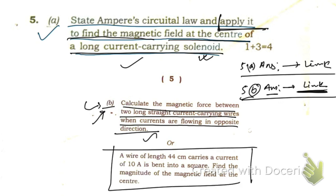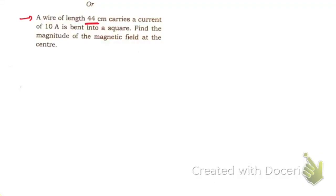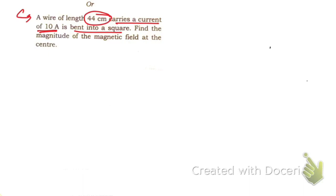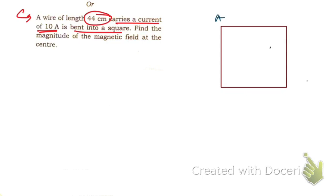Now let's solve the last question. A wire of length 44 centimeters carries a constant current of 10 amperes and is bent into a square. So suppose this square is ABCD. If the total length is 44 centimeters and it is bent into a square, then each side is going to be 11 centimeters, because 44 divided by 4 is 11.